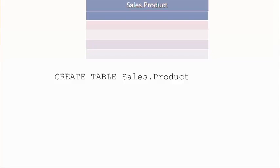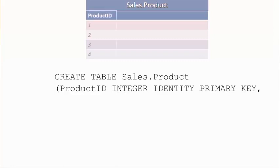A table consists of columns, so we need to start defining them. I'm defining a column called product ID, which stores integer data — whole numbers only. It's a special kind of column called identity, which automatically increments the value with each new row — quite often used as a way of generating a unique key. And we've explicitly said this is the primary key for this table, meaning the value in this column uniquely identifies each row.